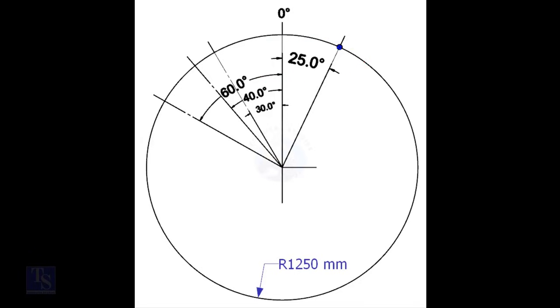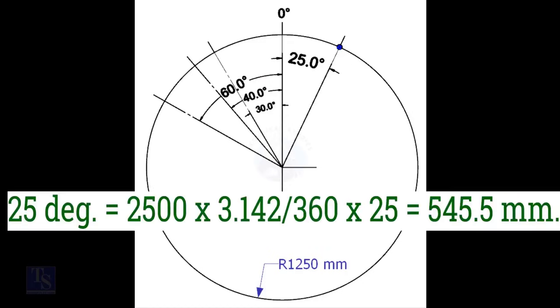We know the included degree and the diameter of the tank. Let us calculate the arc length. Arc length for 25 degrees equals outer diameter, times 3.142, divided by 360, times 25, equals 545.5 millimeters.